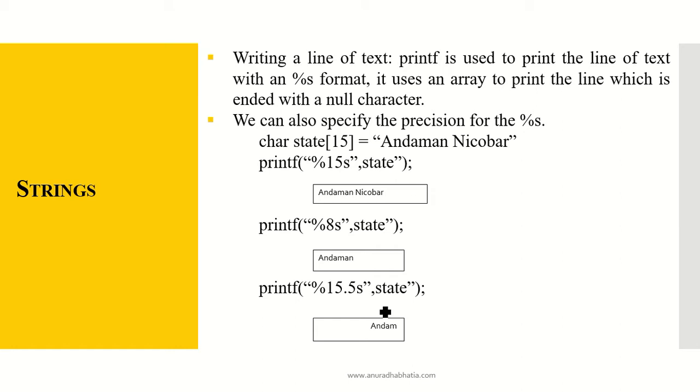Now writing a line of text, printf is used to print the line of text with a %s format. It uses an array to print the line which is ended with a null character. We can also specify the precision for %s. Now let's see how the precision is done.